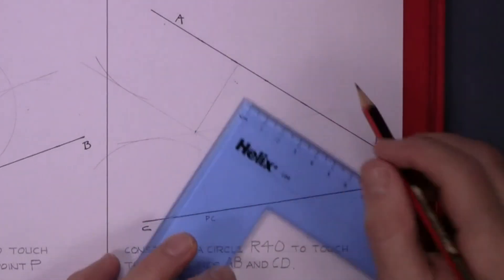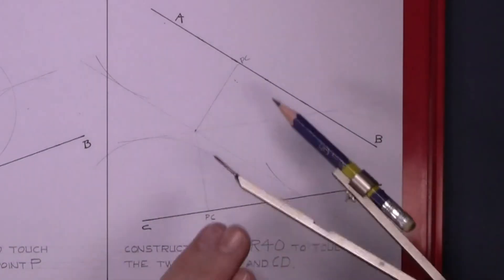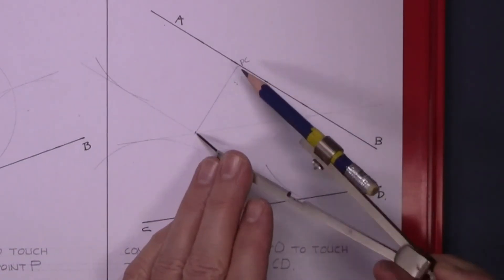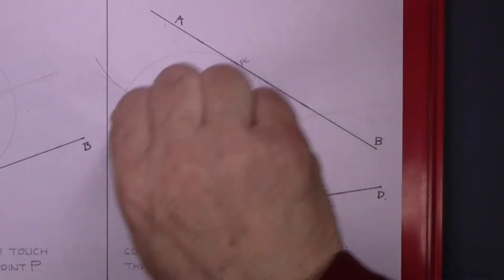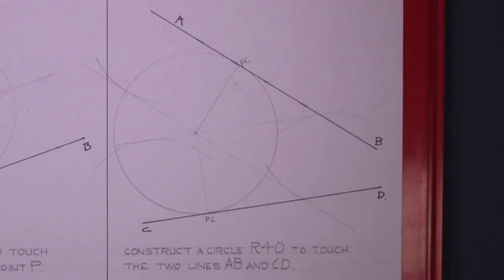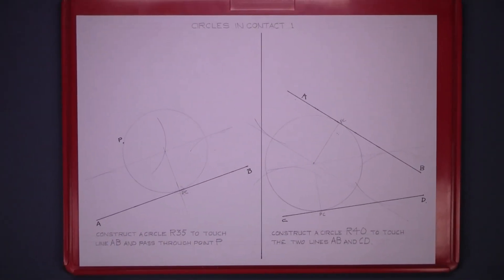Now put the point of the compass in the center you've found, draw your circle. That's that question complete. It has a radius of 40 and the point of contact there and a point of contact there. That's your circles in contact complete.